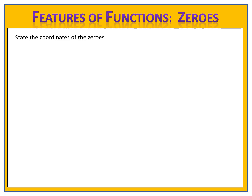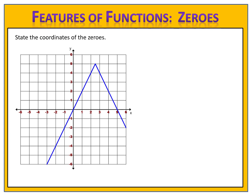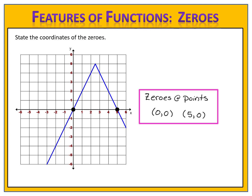Let's try one more exercise. Here's the graph of a function — can you state the coordinates of the zeros? We look along the x-axis and see two points of intersection. The coordinates of those points are (0, 0) and (5, 0). These are the coordinates for the zeros of the function. The input zero produces the output of zero, and the input five produces the output of zero.